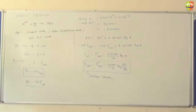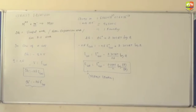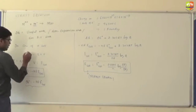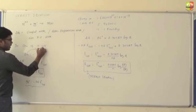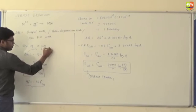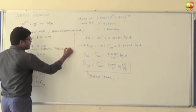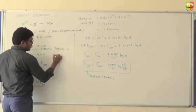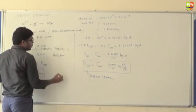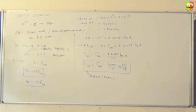In electrochemical sense, you will get numerical problems from the Nernst equation. One more important point: delta G is an extensive property. Extensive properties are additive. Intensive properties are non-additive, like EMF of a cell.